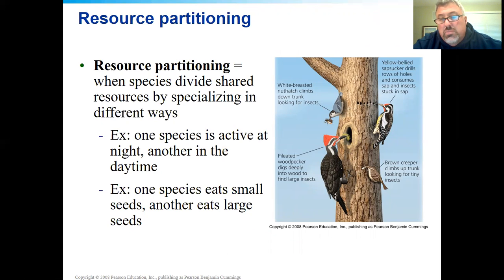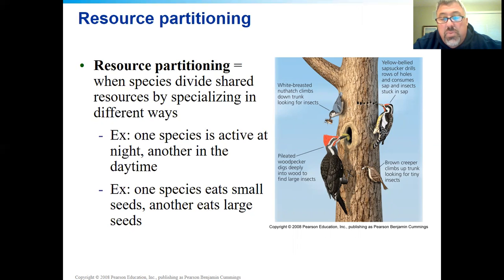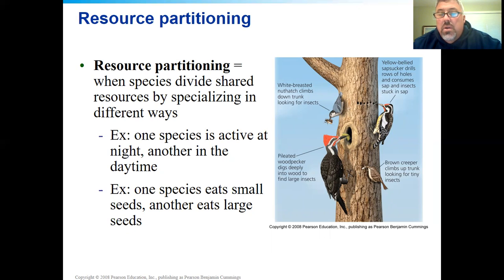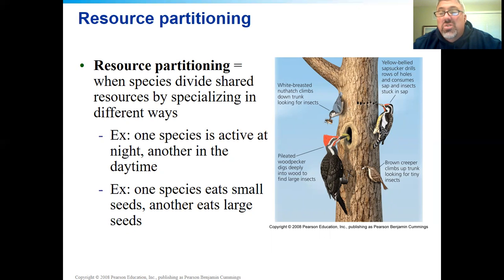If you look at birds, they do resource partitioning really well. You can see the white-breasted nuthatch, the pileated woodpecker, yellow-bellied sapsucker, and brown creeper on this tree — all utilizing different resources on the tree or different areas at different times. They're not utilizing the same resources, so they're all able to coexist. The white-breasted nuthatch eats insects, the yellow-bellied sapsucker drinks sap — those two don't interact at all. They may sit next to each other but they're not consuming the same resource.